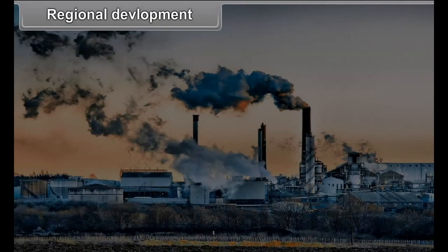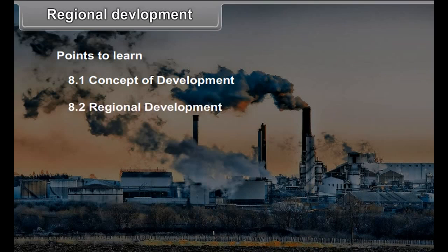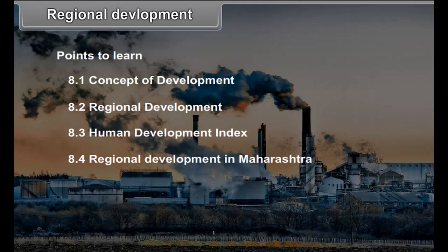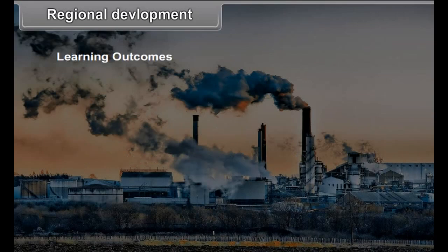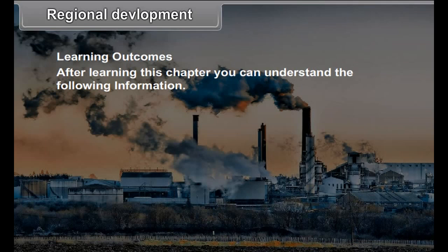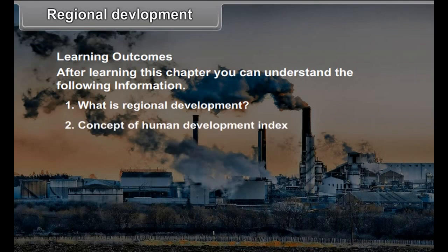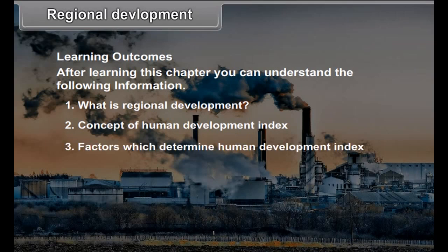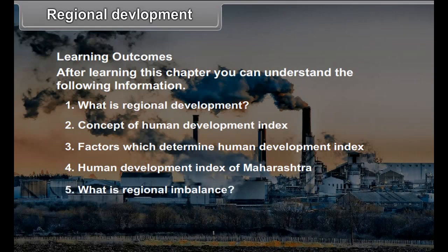Chapter 8: Regional Development. Points to Learn: 8.1 Concept of Development, 8.2 Regional Development, 8.3 Human Development Index, 8.4 Regional Development in Maharashtra. Learning Outcomes — after learning this chapter, you can get the following information: What is Regional Development? Concept of Human Development Index, factors which determine Human Development Index, Human Development Index of Maharashtra, What is Regional Imbalance, and Causes of Regional Imbalance.